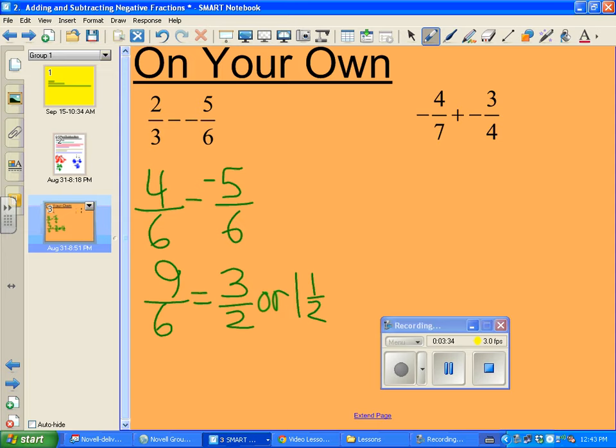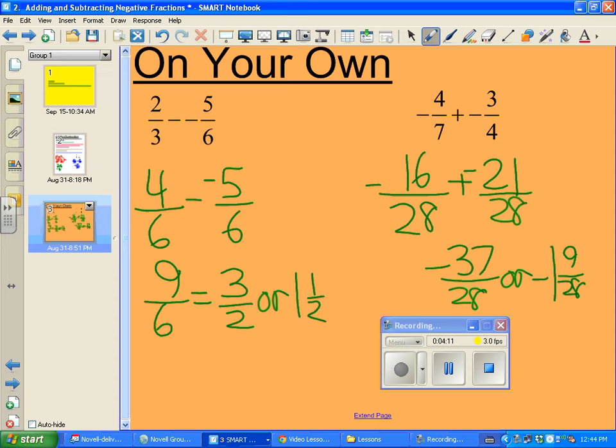Negative four-sevenths plus negative three-fourths. That's a common denominator of twenty-eight. Seven times four is twenty-eight. Four times four is sixteen. That's negative. Four times seven is twenty-eight. Three times seven is twenty-one. That's also negative. So double negatives. Negative sixteen-twenty-eighths plus negative twenty-one-twenty-eighths. Add them together. Negative thirty-seven-twenty-eighths, which is fine by me. If you want to make it a mixed number, we get negative one and nine-twenty-eighths. And this concludes your lesson over adding and subtracting negative fractions.